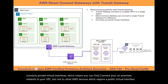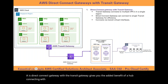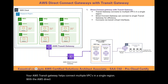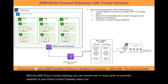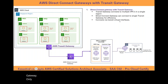AWS Direct Connect gateway with a transit gateway gives you the benefit of a hub connecting with another hub. Your AWS transit gateway helps connect multiple VPCs in a single region. With your AWS Direct Connect gateway, you can connect one or many on-premises networks to your Direct Connect gateway, which can then connect to your AWS transit gateway. One important point is that the transit gateway connection with the Direct Connect gateway only happens via a transit virtual interface.